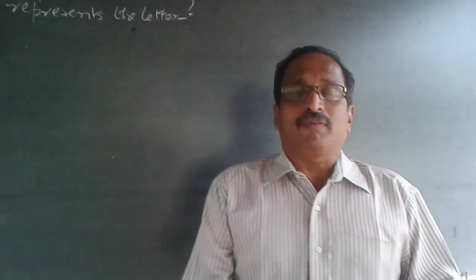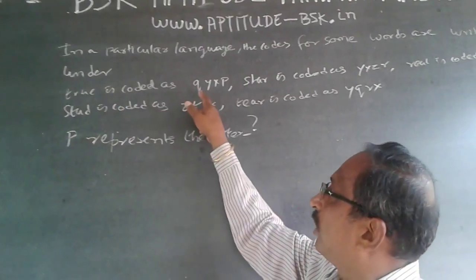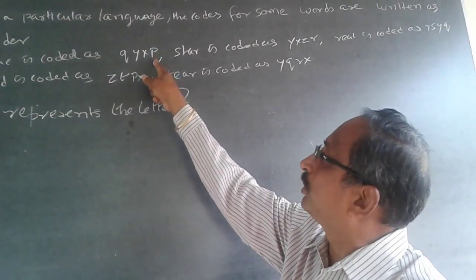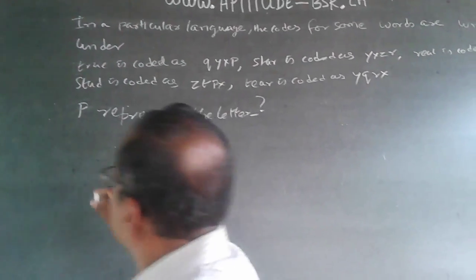Map it word-by-word. Here the question is: TRUE is coded as QYXP. You have to find out P is representing which letter here.